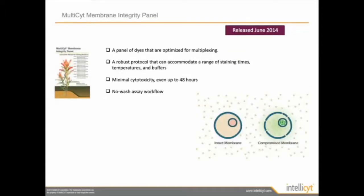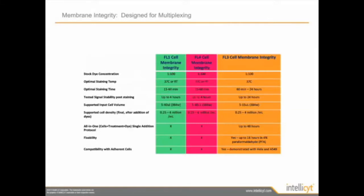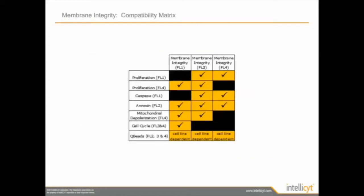The next reagent is the membrane integrity dye, which allows you to monitor cell viability. When the cell membrane is intact, the dye cannot penetrate into the cell. However, if the membrane is compromised, the dye will get into the cell and light it up. The dye comes in three different flavors: FL1, FL4, and FL3. FL1 and FL4 have very similar properties, but FL3 gives you an added bonus of being stable for up to 24 hours. The FL3 dye is fixable and compatible with adherent cells such as HeLa and A549. You can multiplex the membrane integrity dye with proliferation and our apoptosis assay that looks at caspase, SN5, and mitochondria depolarization.